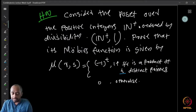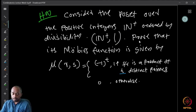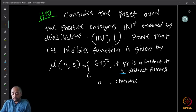As homework, consider the positive integers N+ ordered by the divisibility relation. Prove that its Möbius function is given by μ(r, s) = (−1)^t if s/r is a product of t distinct primes, where t is precisely the number of distinct prime factors of s/r. Note that s/r cannot have a prime square, for example.